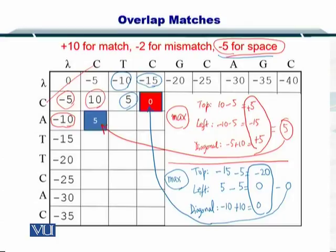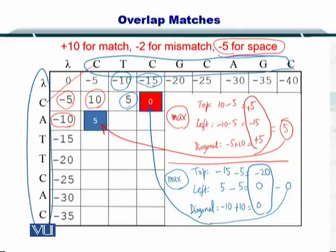Next, in the Needleman-Wunsch algorithm, we talked about placing the two sequences on top like that and on the left side like that. And we initialized the left column and the top row with minus I into the gap. In this case, the gap is minus five. So you can see minus five, minus 10, minus 15, minus 20 and so on.